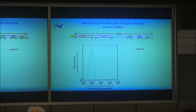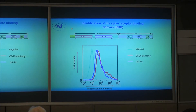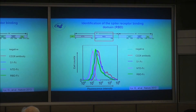What have we done? This is the cell — negative control. This is the CD26 antibody that confirmed the cell we are using expresses CD26, which is the MERS receptor. We then expressed the Fc-fusion S1 here and showed it binds to the cell surface. Using the NTD showed no binding. Using the RBD — the green one — also binds. So that confirms the RBD is the real receptor-binding domain for MERS.